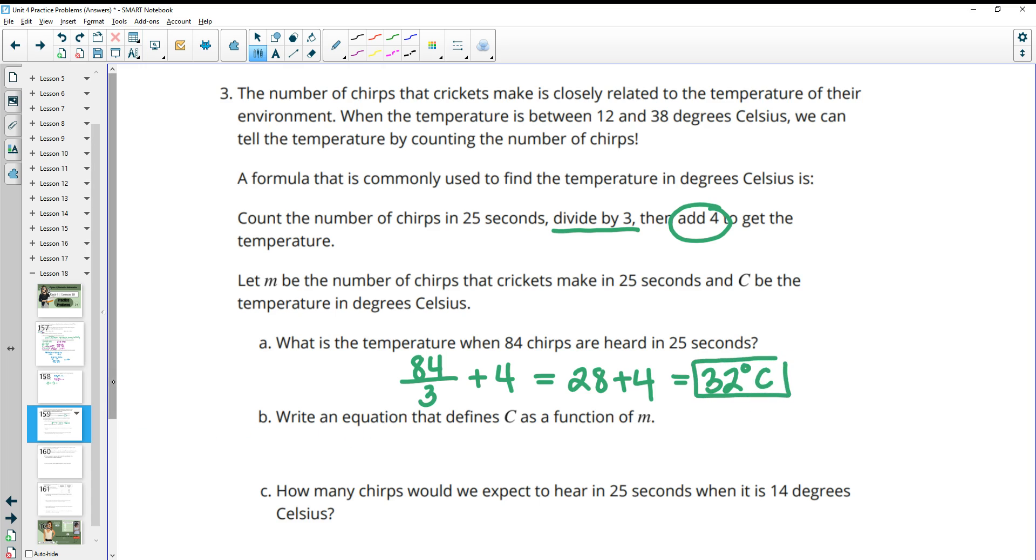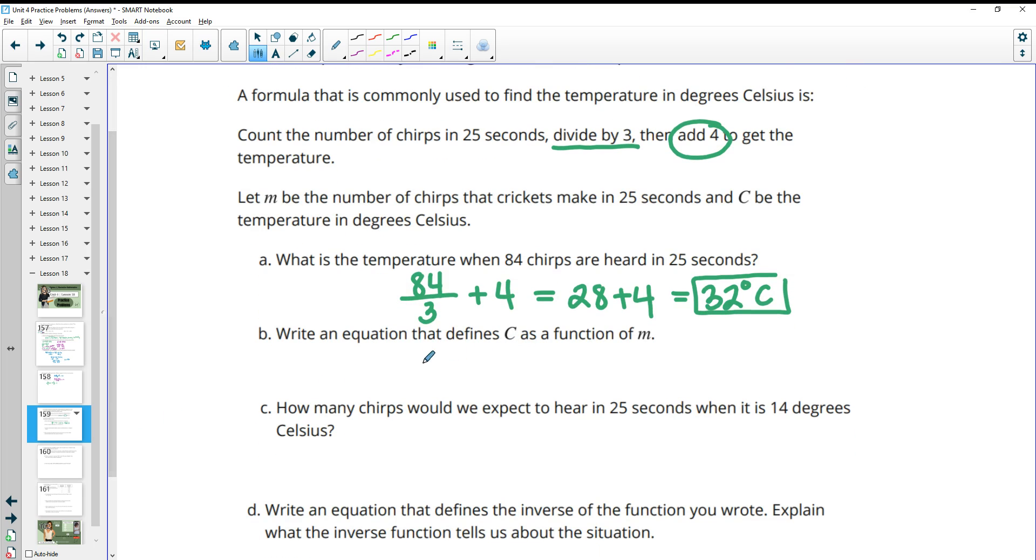Write an equation that defines C as a function of M. So the temperature equals, we took the number of chirps, divided by 3, and then added 4. So M is our number of chirps, we'll take that, divided by 3, and then we'll add 4.